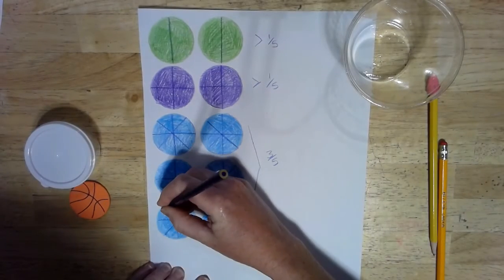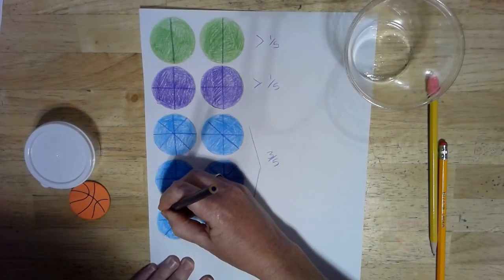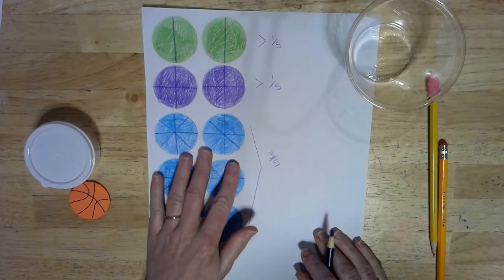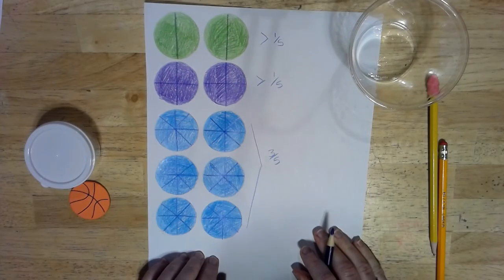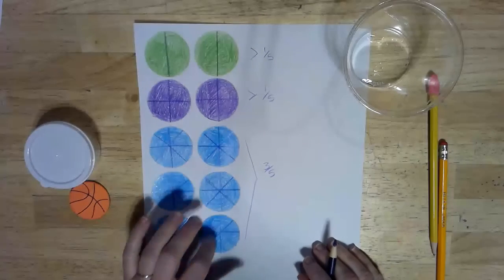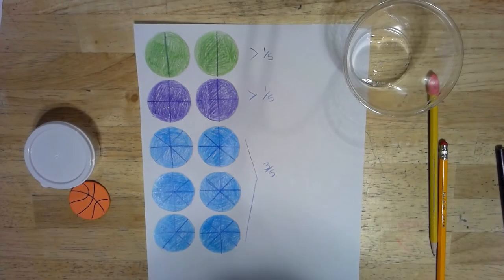Peahens, not so much. Females do not get the big long tails like the males do. Alright, so go ahead and divide your third set into eighths. And we are going to gently cut these out and then cut along the lines to cut them into pieces. We'll see you in the next video.